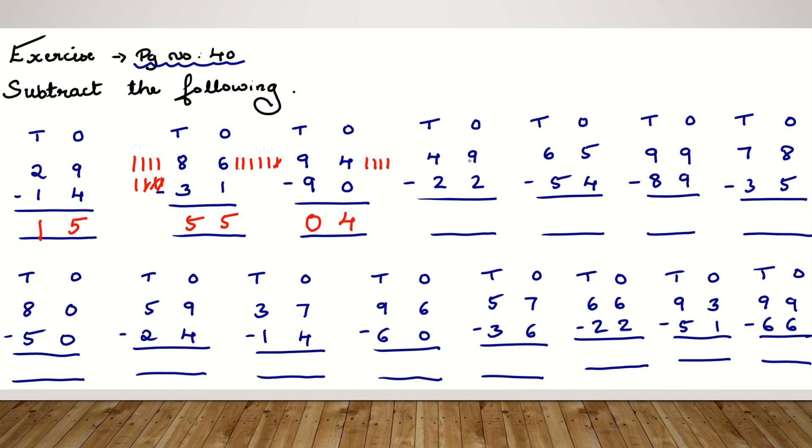Moving to the next question. 49 minus 22. So let's start solving the ones column. There are 9 ones minus 2 ones. So we have 9 minus 2 that is 7. 4 minus 2 is 2. And the answer we get here is 27.